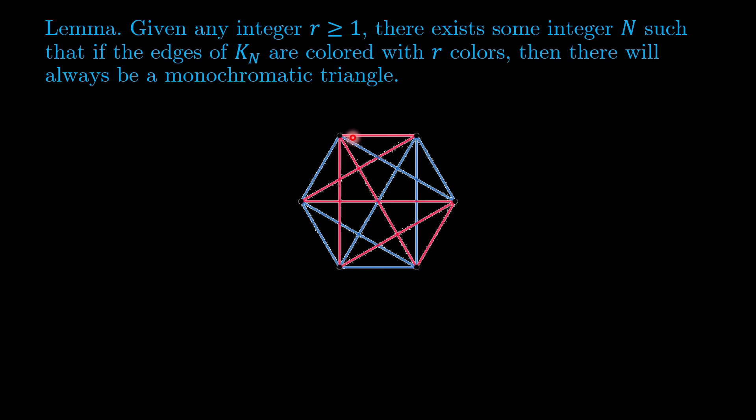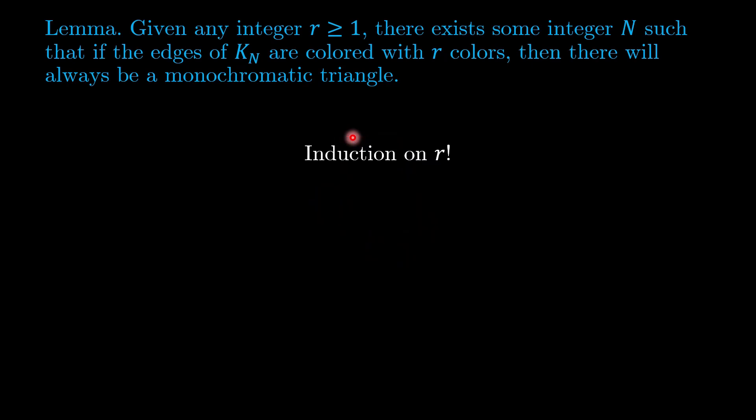The way we will prove this lemma, not surprisingly, is by induction on r. So for the base case r equals 1, we can simply choose N equals 3. When we have the edges of K_3, which is a triangle colored with one color, of course there will always be a monochromatic triangle.